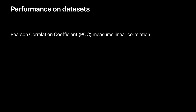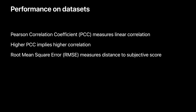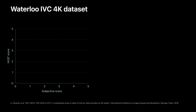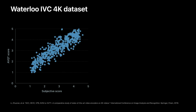To measure performance of a video quality metric objectively, we make use of correlation and distance measures. Pearson correlation coefficient, or PCC, measures how well the predicted scores correlate with subjective scores — a higher PCC value implies better correlation. RMSE measures how far off the predictions are from subjective scores; a lower RMSE value implies higher prediction accuracy. On the scatter plot, the x-axis shows ground truth subjective video quality scores and the y-axis shows scores predicted by AVQT. Except for a few outliers, AVQT does a great job predicting the subjective scores, reflected in high PCC and low RMSE scores.